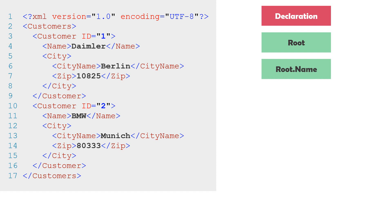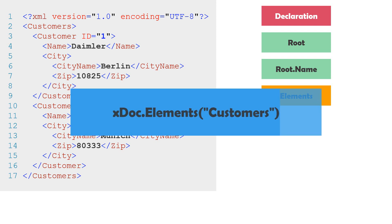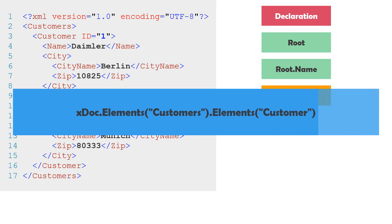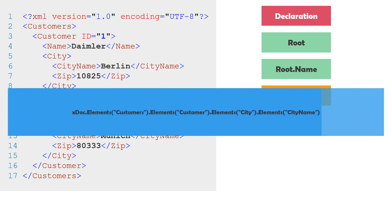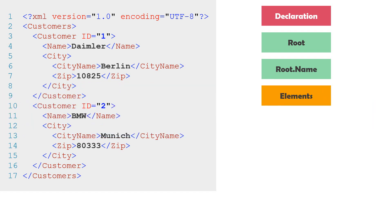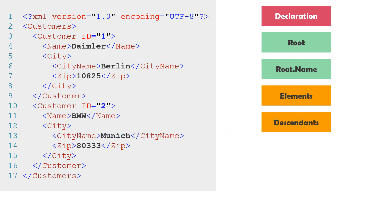XML consists of elements. To read an element from the document, we can use the function elements with the element name. But if we want to get a deeply nested element like city name, we would have to write the names of each parent element, which becomes very difficult. Therefore, we have another function called descendants, which lets us get elements without writing each parent element. For example, to get the city name element, we use the document variable with descendants and then elements with the element name city name.